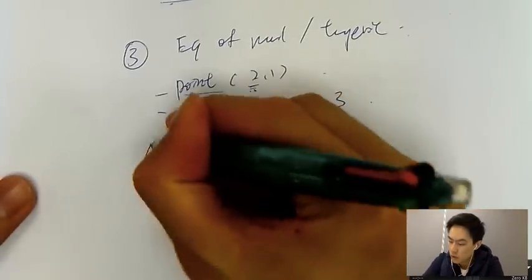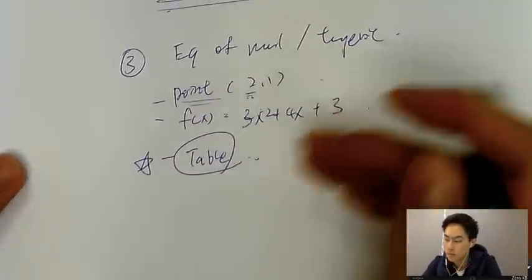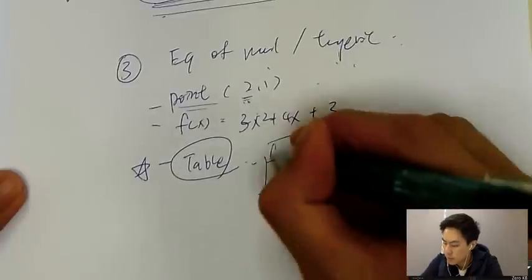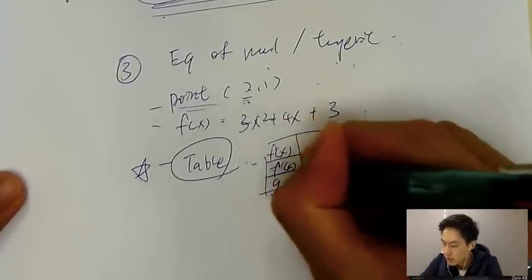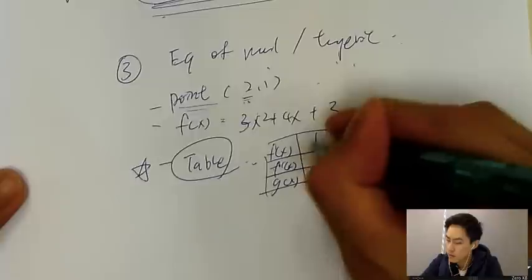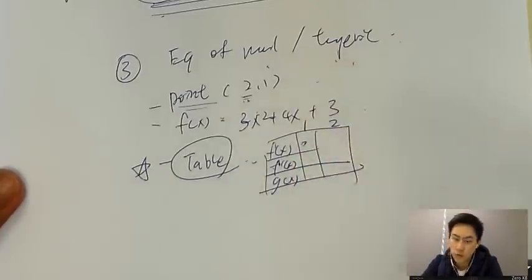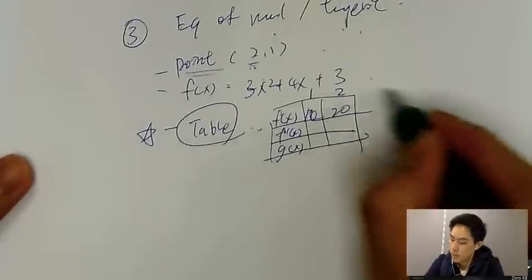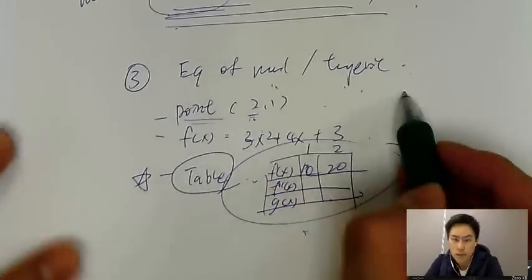And also for a new trend, you are given a table instead of an equation to find out the equation of normal or tangent. I'll give you a set of tables, let's say fx, and then f dash x, and then gx, something like that. And you have when x is equal to 1 and 2, and you have different numbers, so let's say this one's 10, 20, and so on. You need to make use of the table to find out the equation of normal and tangent.